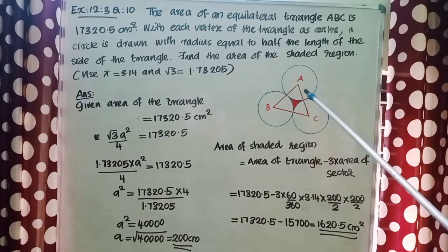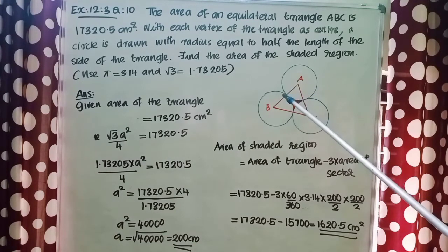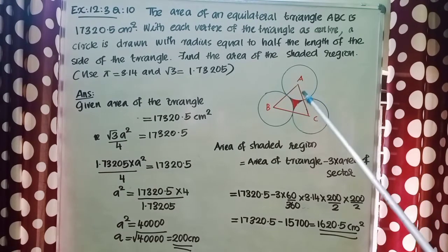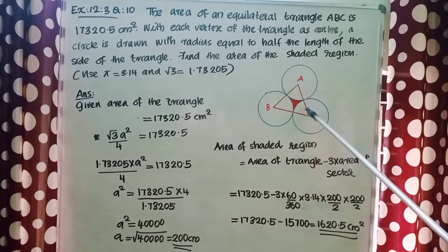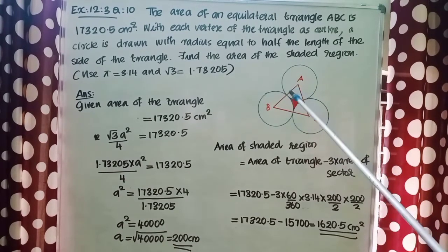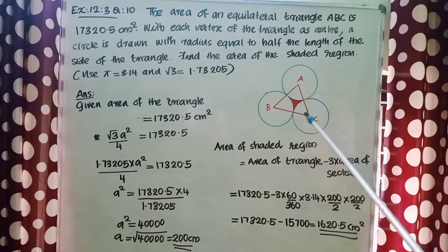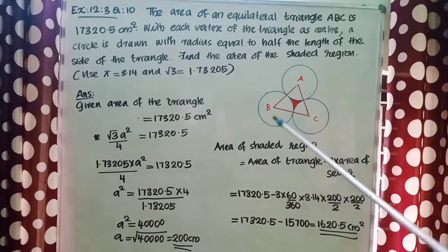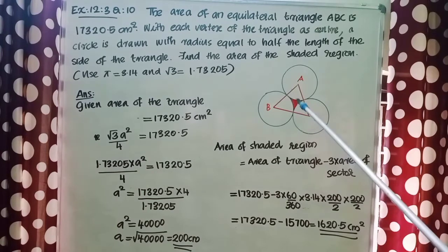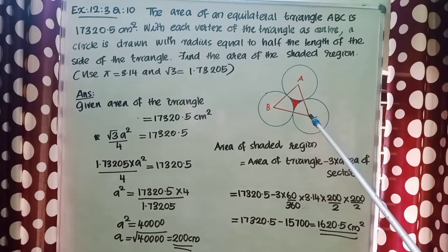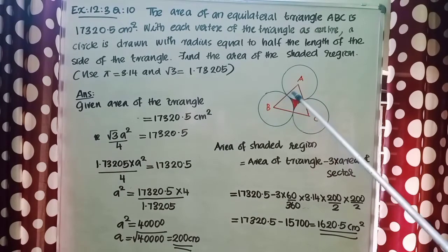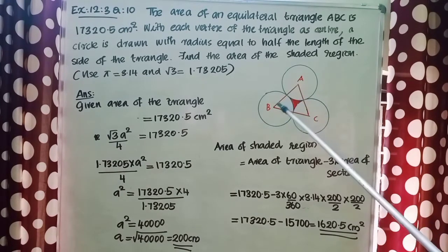Here is the given figure. The radius of the circle is equal to half of the length of the side of the triangle. We need to find out the area of the shaded region. It is clear from the figure that to find the area of the shaded region, we need to subtract the area of these three sectors from the area of the triangle.